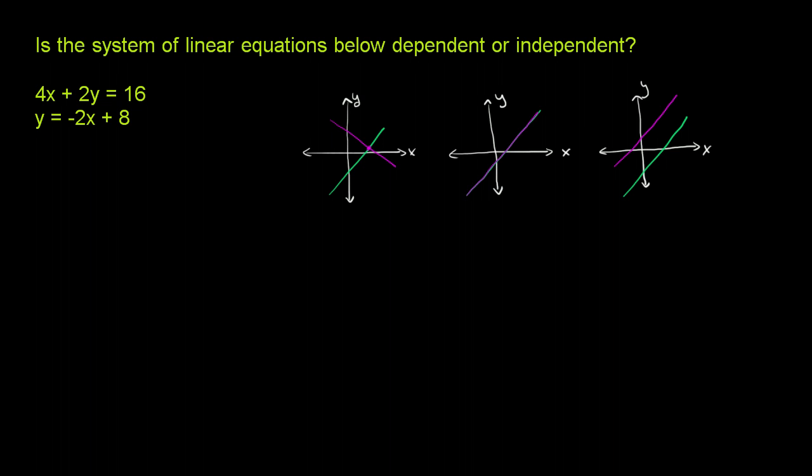So just to give you a little bit of the terminology here, and we learned this in the last video, this type of system where they don't intersect, where you have no solutions, this is an inconsistent system. And by definition, or just taking the opposite of inconsistent, both of these would be considered consistent.